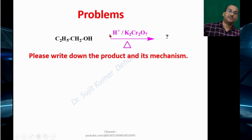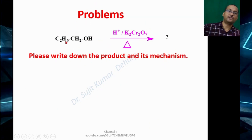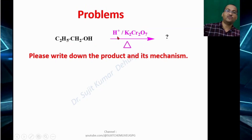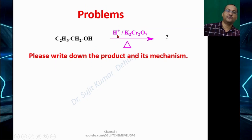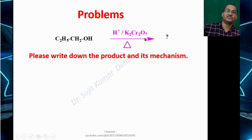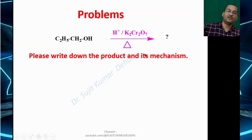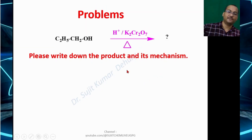Here is a problem for you: suppose you take propanol — what will be the product if you use H+ and potassium dichromate as reagent? Please write down its mechanism.